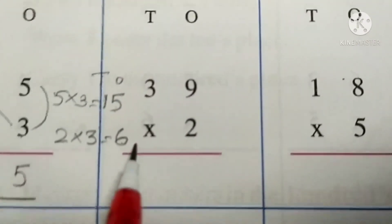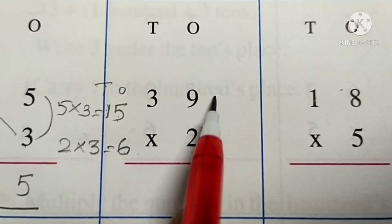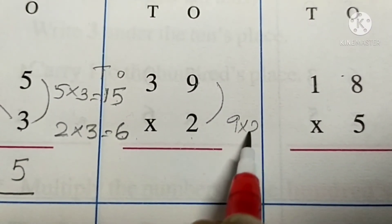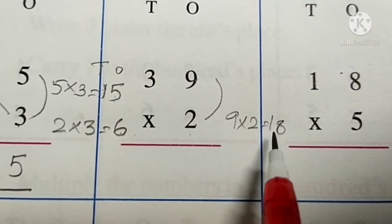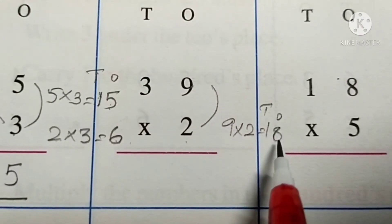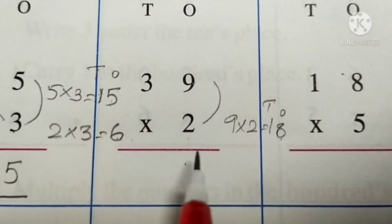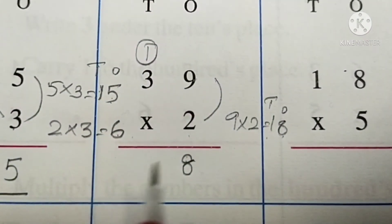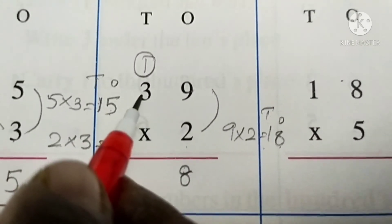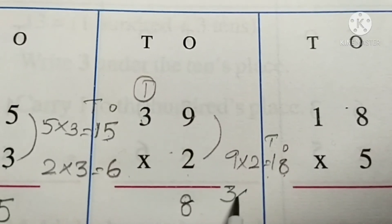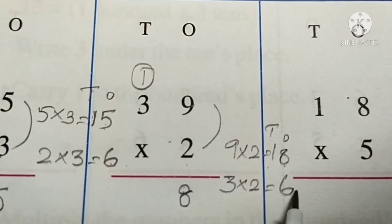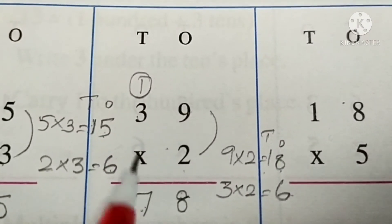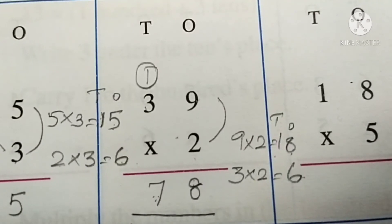Next, thirty-nine multiplied by two. First, multiply the numbers at the ones place — nine twos are eighteen. Eighteen is a two-digit number, so write eight under the ones place and carry one ten to the tens place. Next, multiply the numbers at the tens place — three twos are six. Add six plus one equal to seven. Write seven under the tens place. So the answer is seventy-eight.